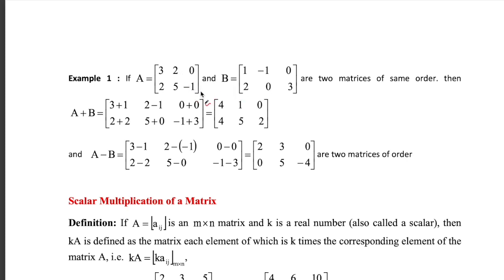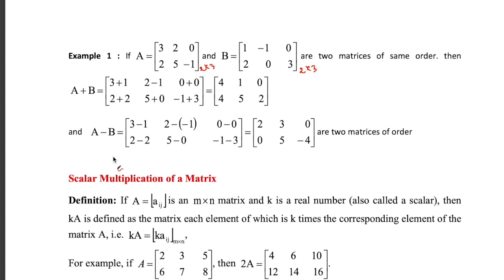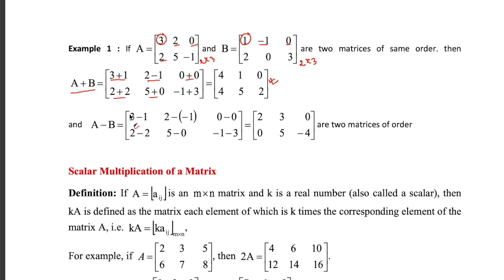Suppose you have two matrices A and B, both of order 2×3 — two rows and three columns. Since they are the same order, you can add A and B or subtract B from A. To add two matrices, you just need to add the corresponding components: 3+1=4, 2+(−1)=1, 0+0=0, 2+2=4, 5+0=5, and −1+3=2.